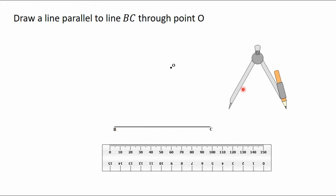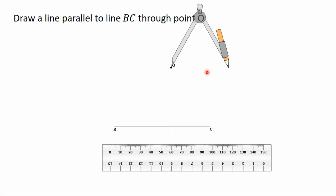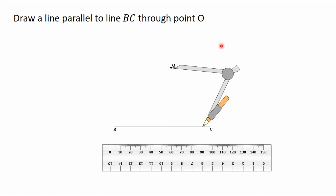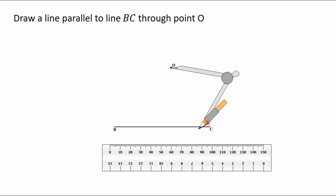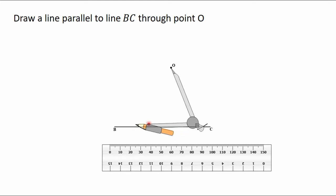To do that, you pick the needle of the compass and you put it on point O. Then you adjust the compass to a reasonable radius such that you can construct two arcs that will intersect the line BC. So after adjusting the compass, you turn it and you construct the first arc to intersect the line BC. Then you turn it to this side also and you draw the second arc to intersect the line BC.